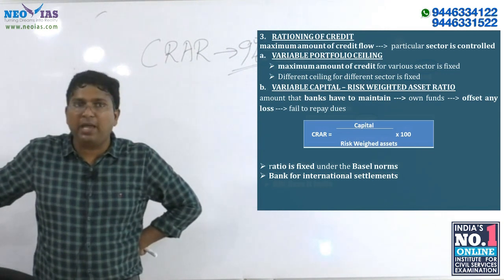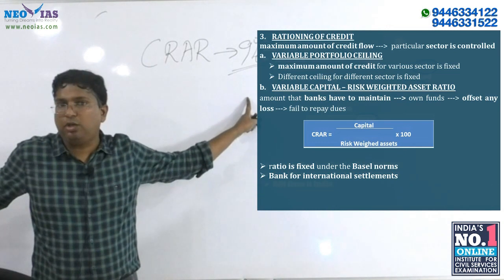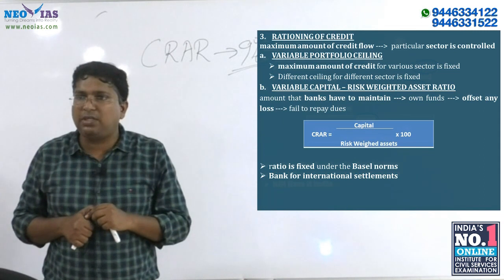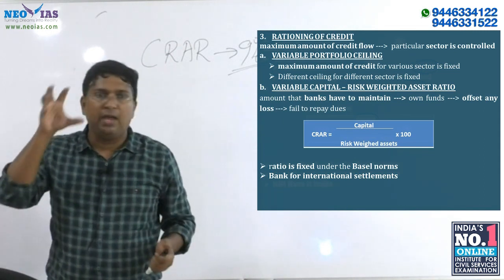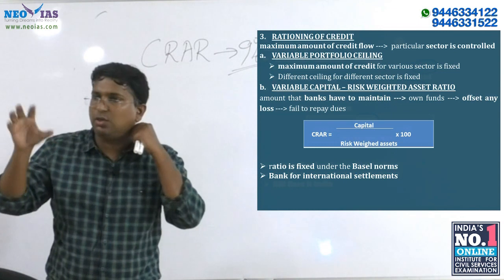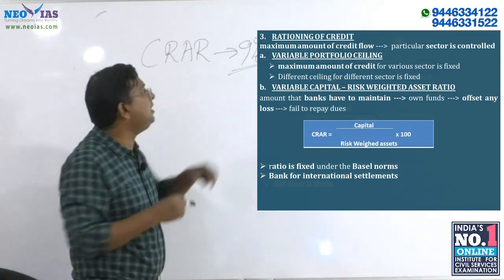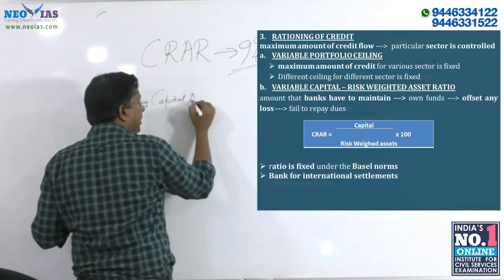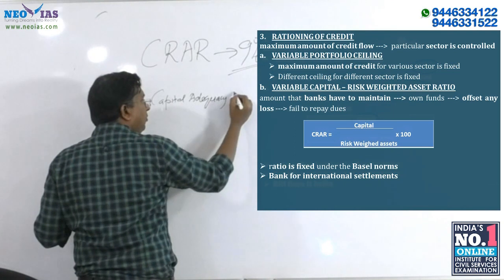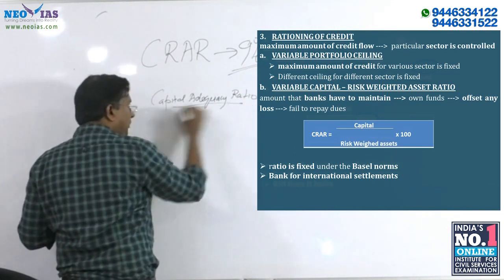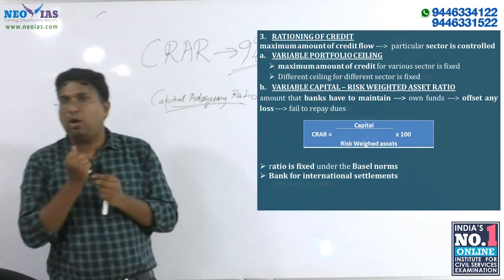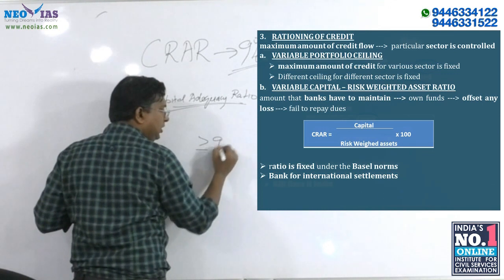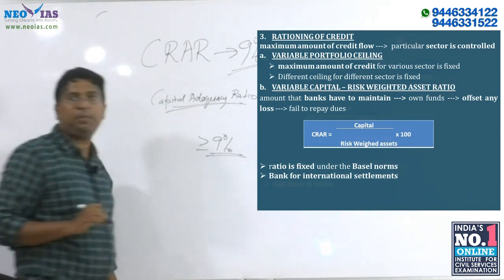In order to comply with this ratio, RBI says that every bank should have a Capital to Risk-Weighted Asset Ratio — also known as the Capital Adequacy Ratio (CAR). The minimum required is 9% or more.